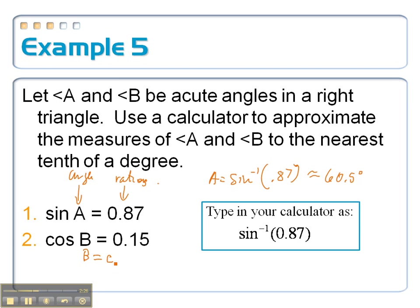angle B should be equal to the inverse cosine of 0.15. That's the side ratios. So if I put in second cosine for the inverse 0.15, I get about 81.4 degrees, rounding to the nearest tenth.